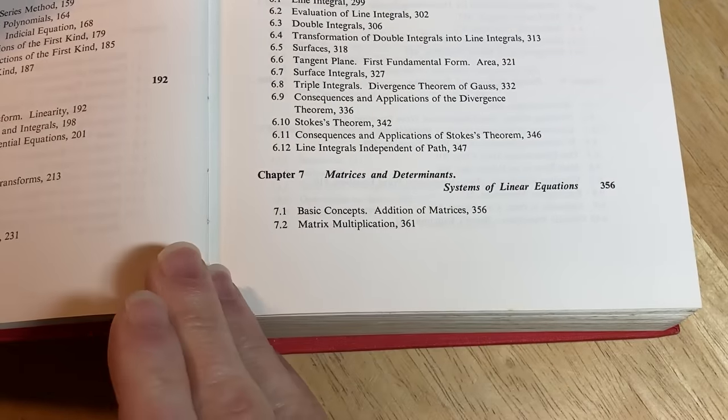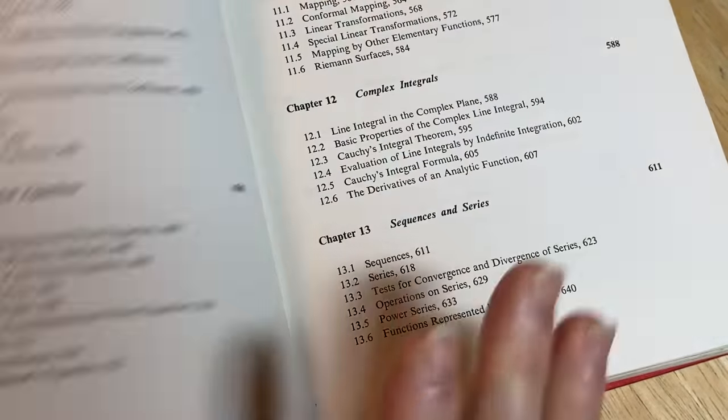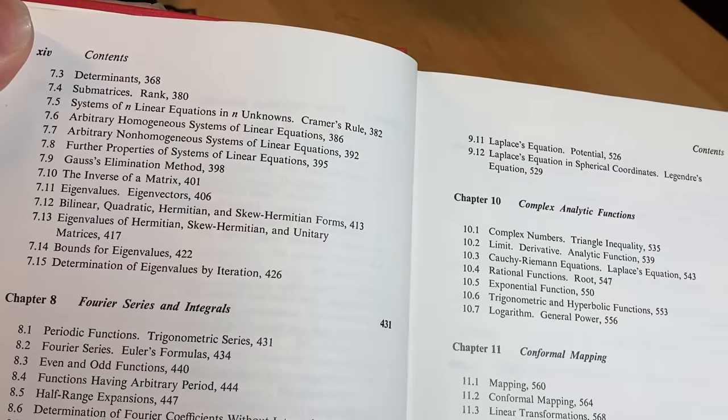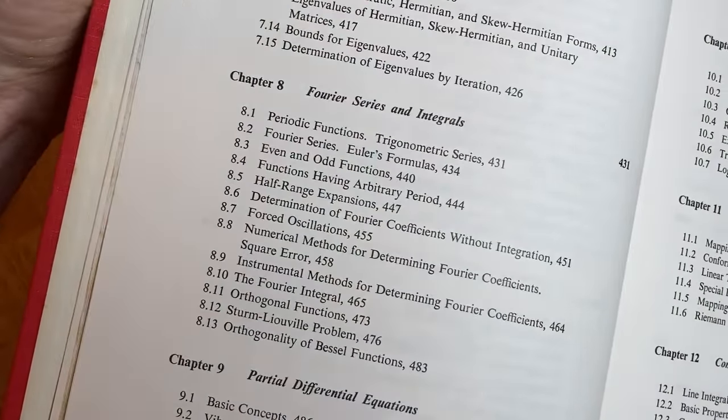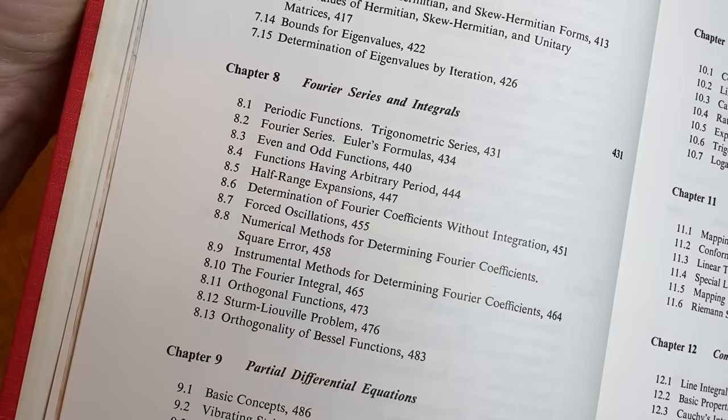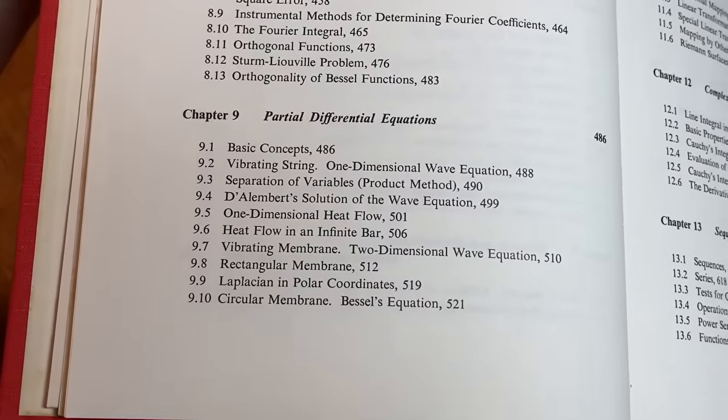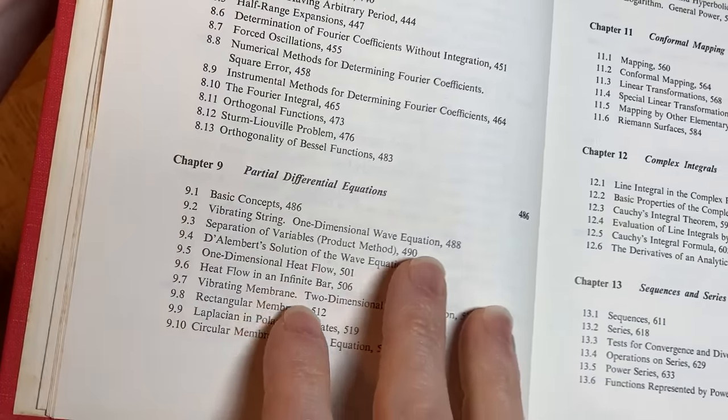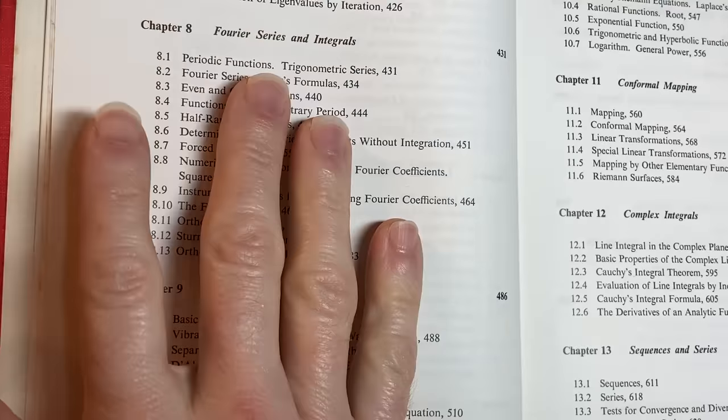Then it goes back and it touched on it at the beginning. Then you have more linear algebra. Matrices and determinants. So something you would learn in a linear algebra class. So pretty nuts. So calculus, differential equations, linear algebra. And you have Fourier series and integrals. Something that you probably wouldn't see. And then partial differential equations. So this is a whole separate course you can take in college, which is pretty amazing. So we've got calculus, linear algebra, differential equations, Fourier series and integrals.